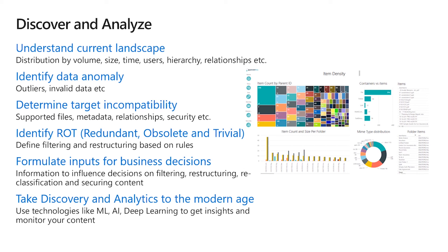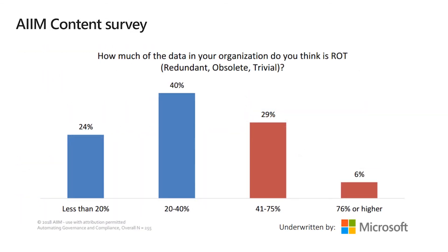All of the discovery analysis becomes input into business decisions about what gets moved, how it gets moved, and inputs into the technical design. The next step is to take discovery analytics into AI. AI is key — it harnesses the 'dark data' in your system and tells you how data is clustered and how items relate to each other. According to an AIIM content survey that Microsoft collaborated on, 41-75% of organizations find that around 29% of their data is not fit for purpose — obsolete or something they could get rid of entirely.